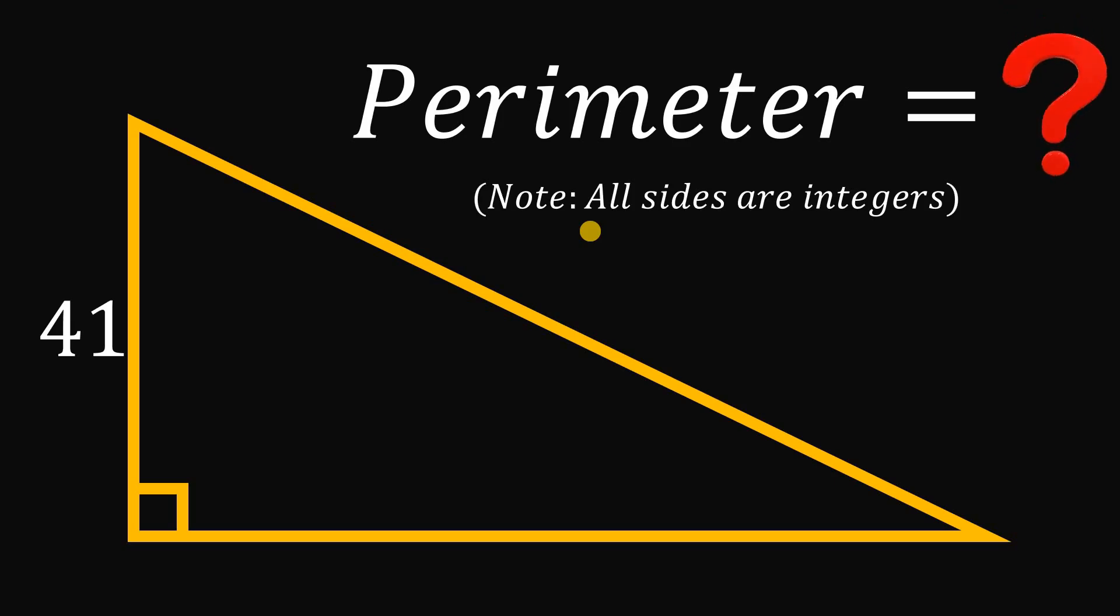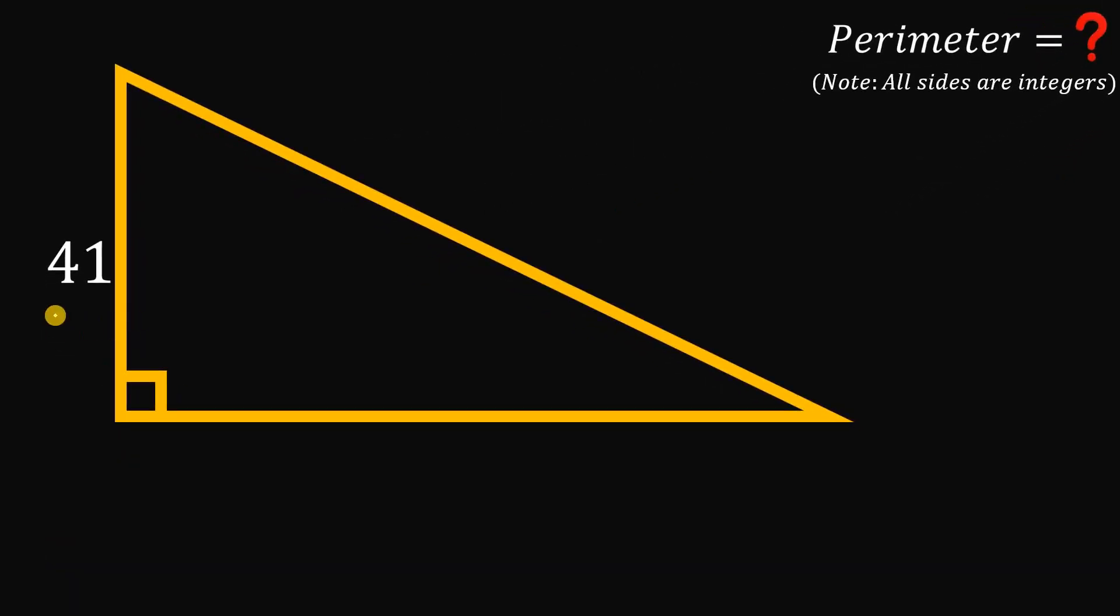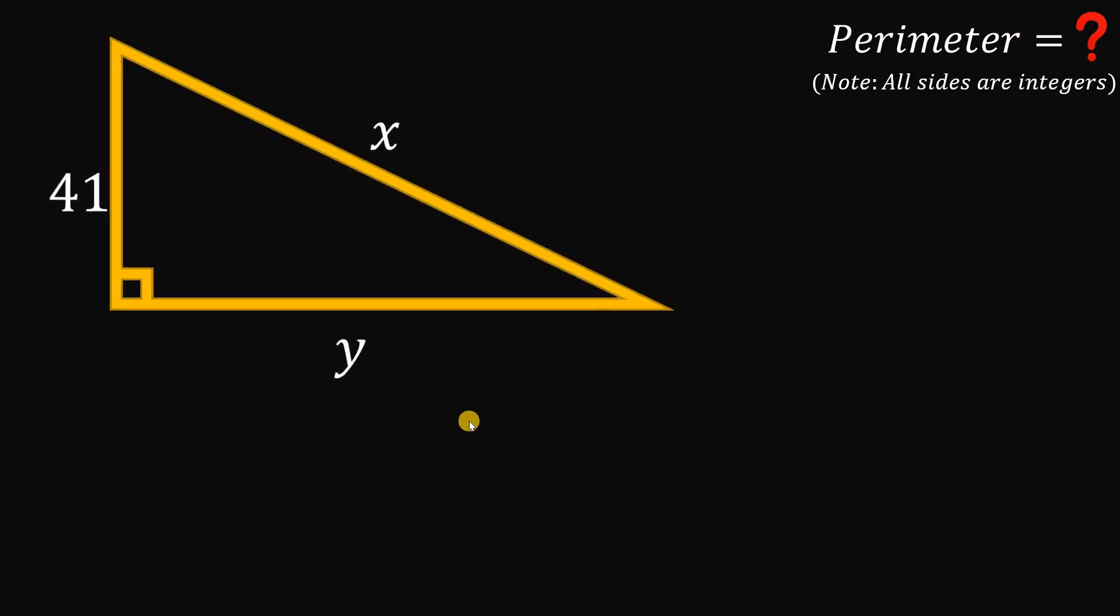Now let's see if you got the correct answer. The question is we want to find the perimeter of this right triangle where all of its sides are integers. Given one side which is 41, to find the perimeter we need to find the hypotenuse and the other leg. So let's call the hypotenuse x and the other leg y, where both x and y are integers. To answer this we will use the Pythagorean theorem.